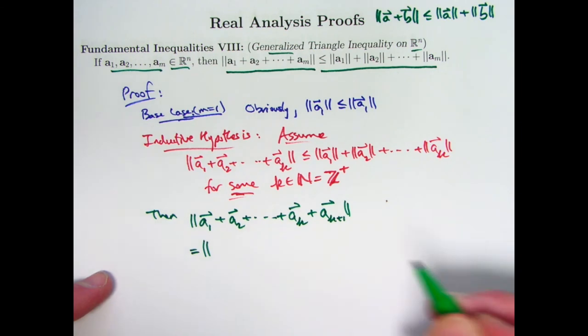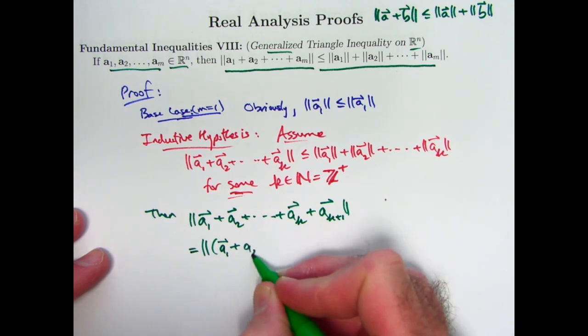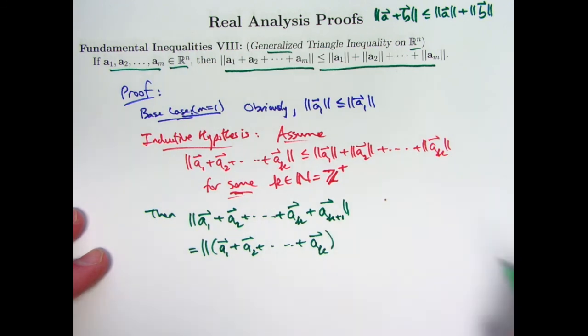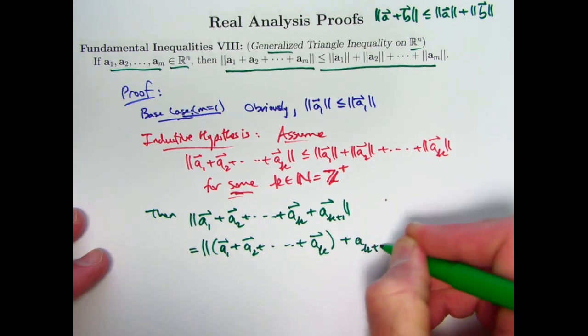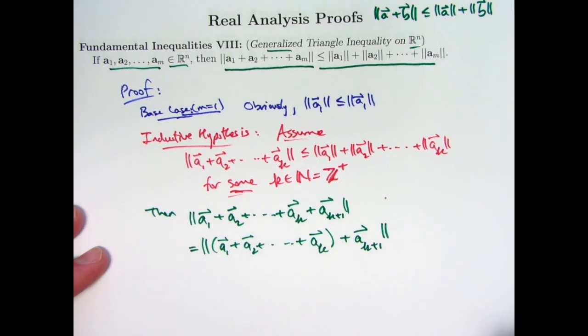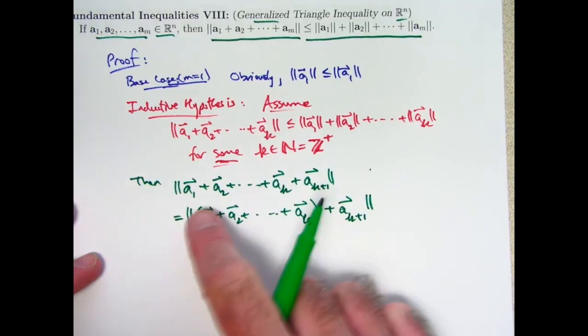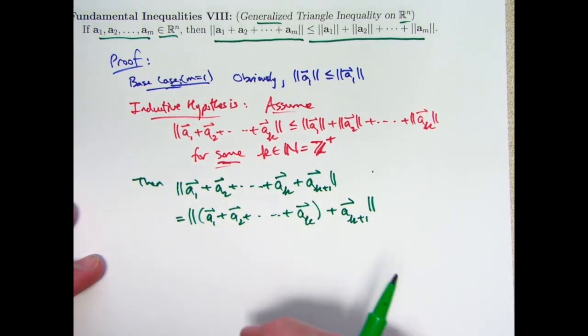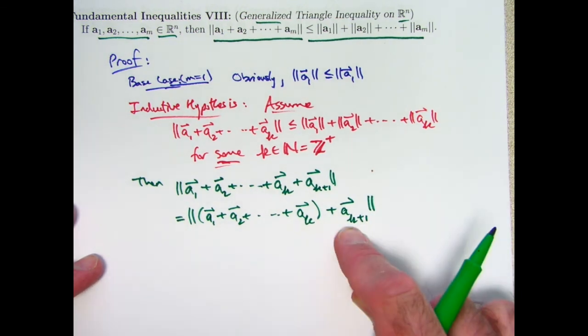For extra emphasis, this is not really a necessary step, but for extra emphasis, let me use parentheses, let me use the associative property for vector addition, and write parentheses around the first k terms, and then treat the last term, the k plus first term, by itself. That emphasizes that even though I have k plus 1 vectors here, I can really think of this as the sum of two vectors. This vector, which is formed by adding k vectors together, and this vector.